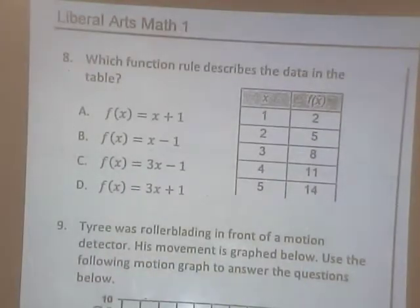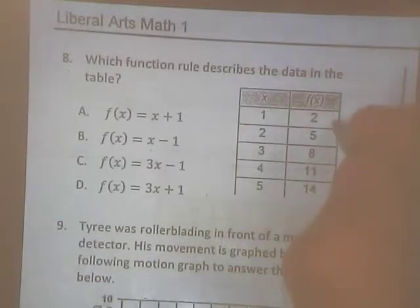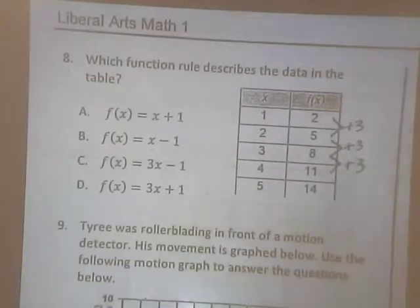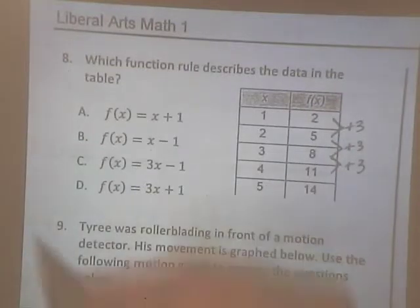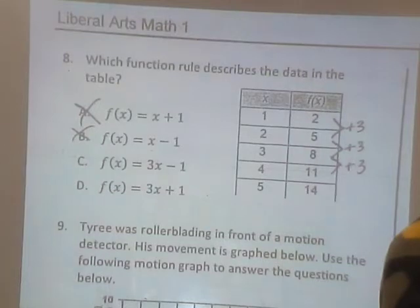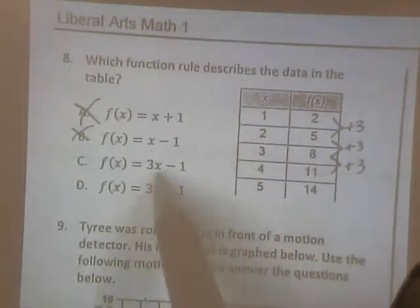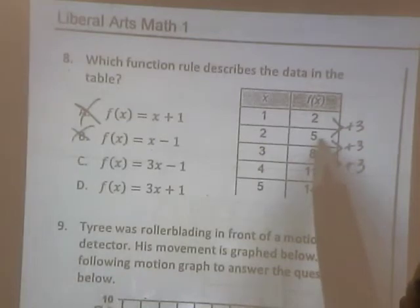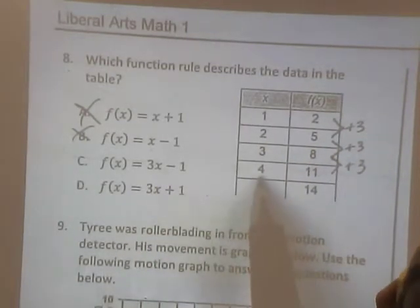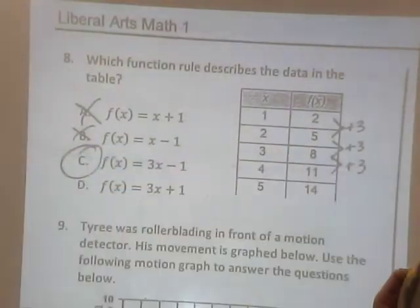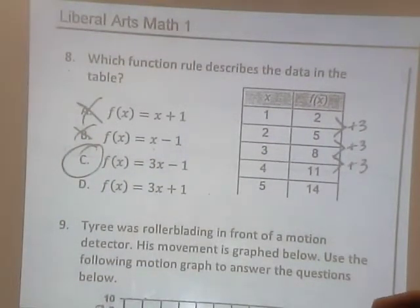Number 8. Which table rule describes the data in the table? Same as before. Look at the y's. What's the difference in the y's? Plus 3. Plus 3, plus 3. So that's going to be our slope. So I can eliminate A and B, yeah? Because the slope on A and B is 1. And now let's plug them in. Let's plug in a 5. Oh, I'm sorry. We've got to plug the x's in. Plug in a 2. 2 times 3 is 6, minus 1 gives us 5. That one works. Let's plug in a 4. 3 times 4 is 12, minus 1 gives us 11. It's C.